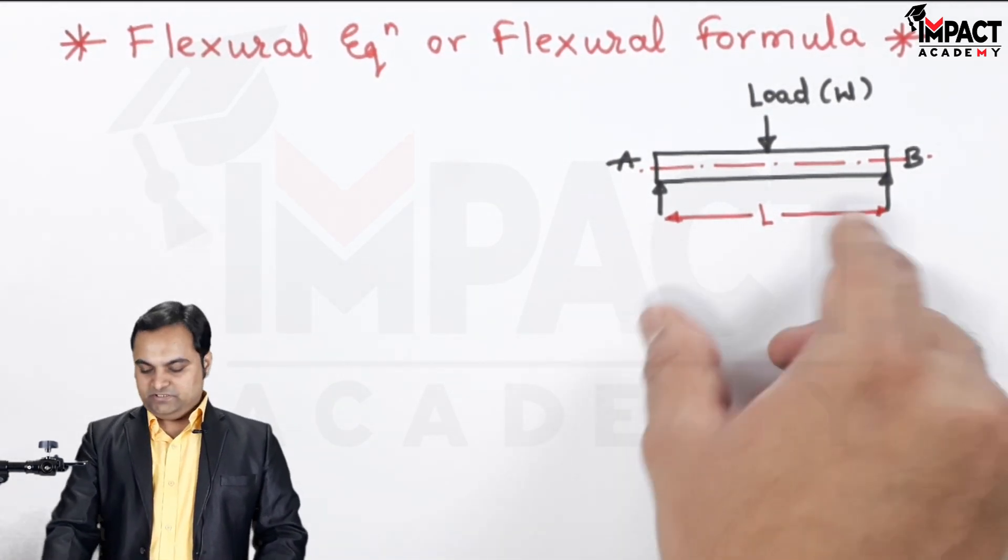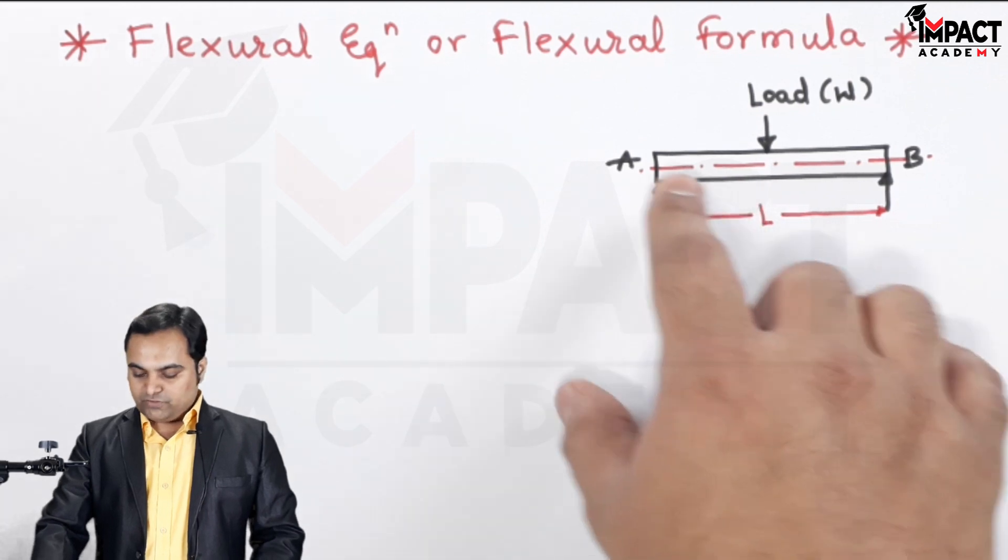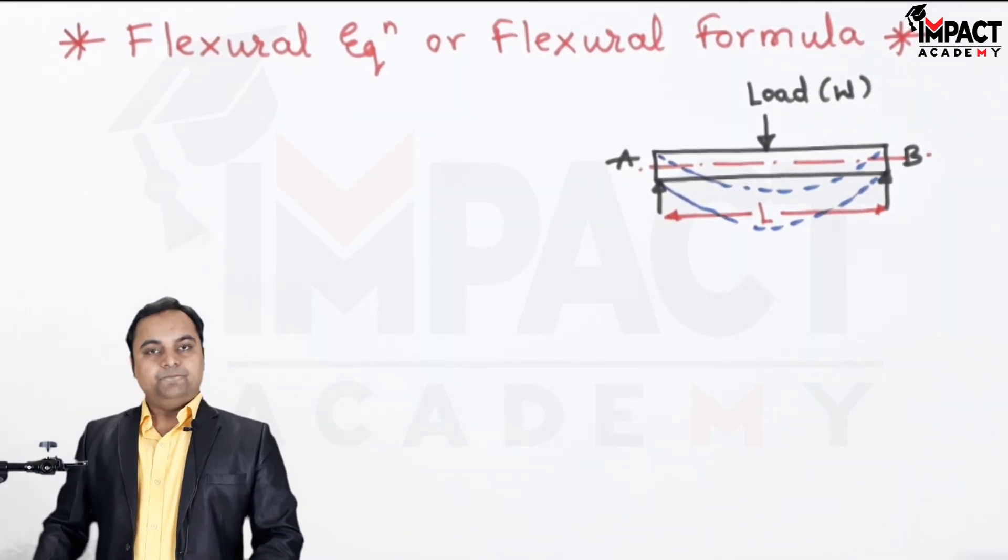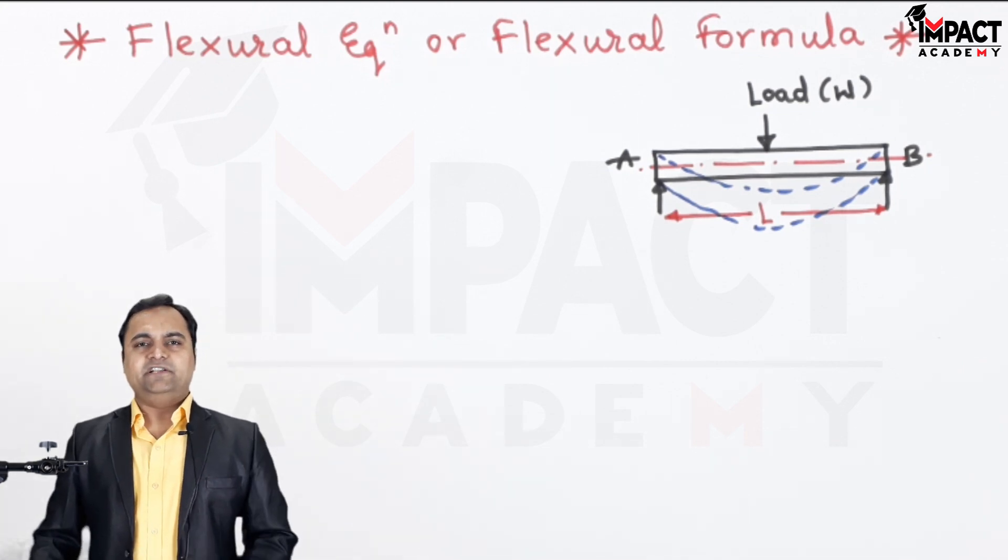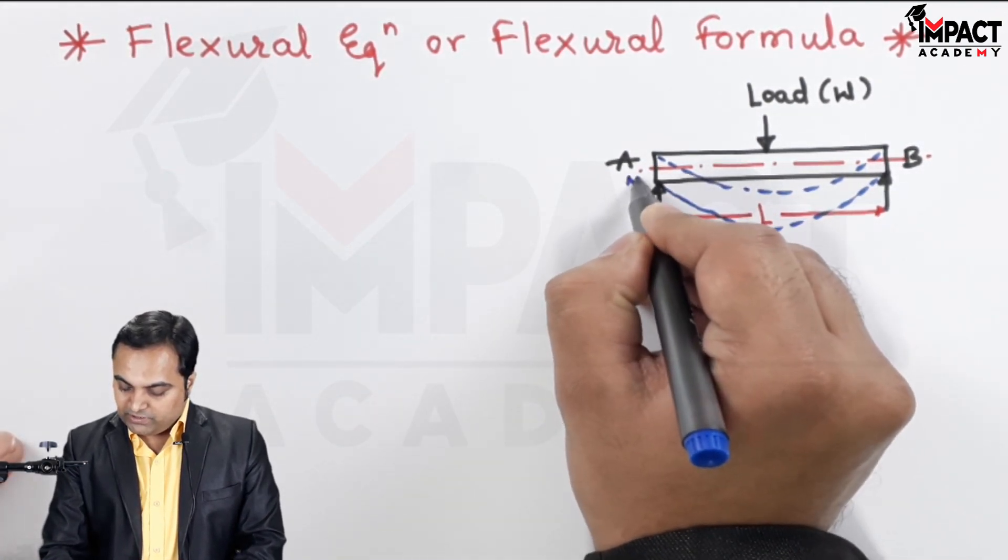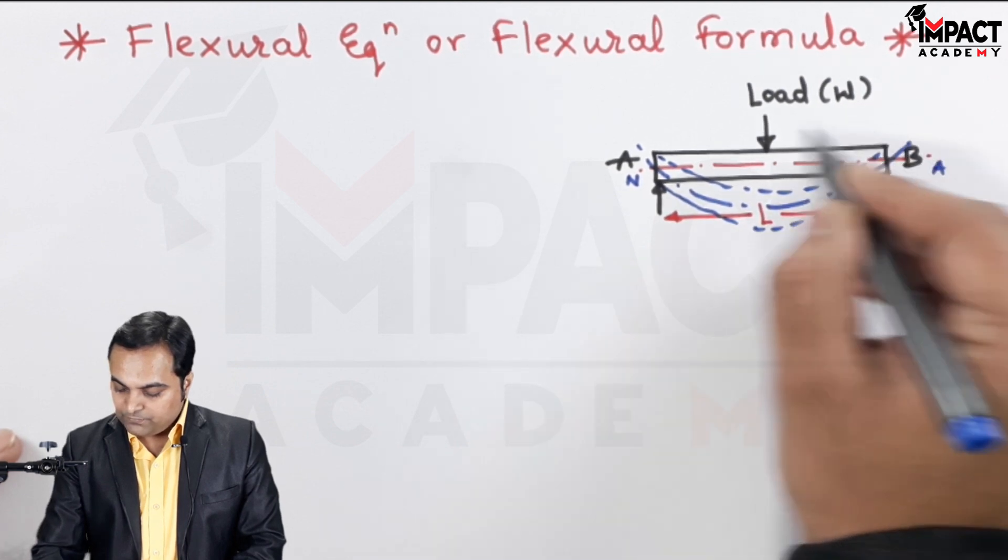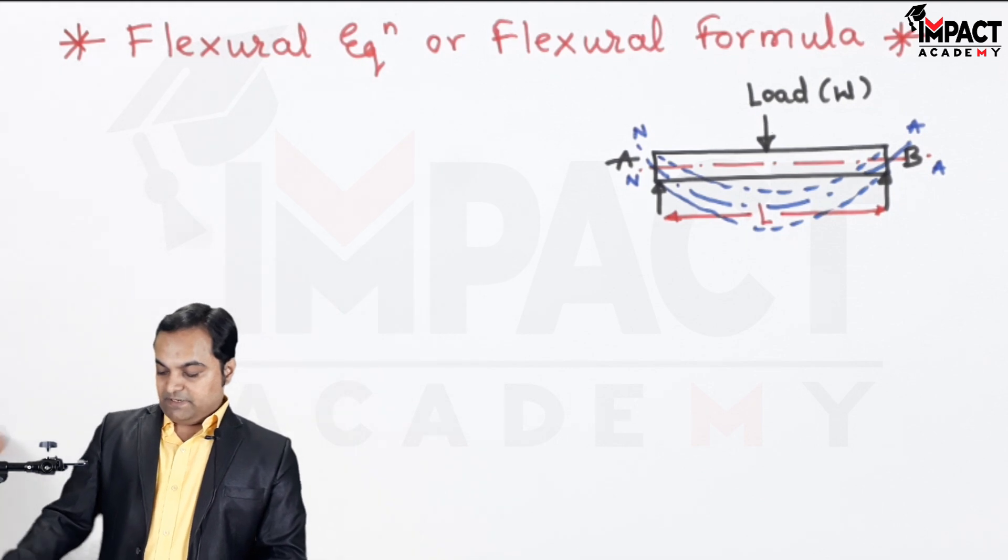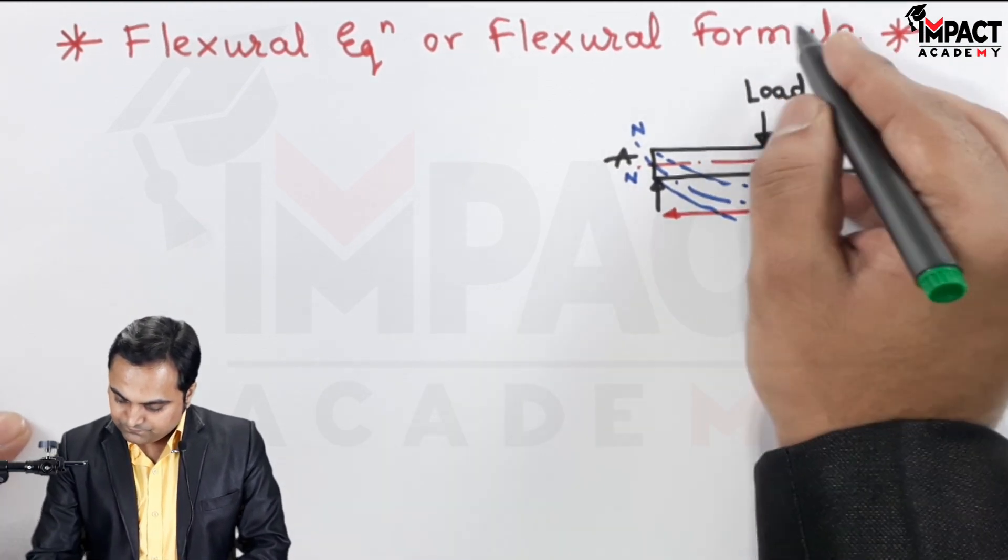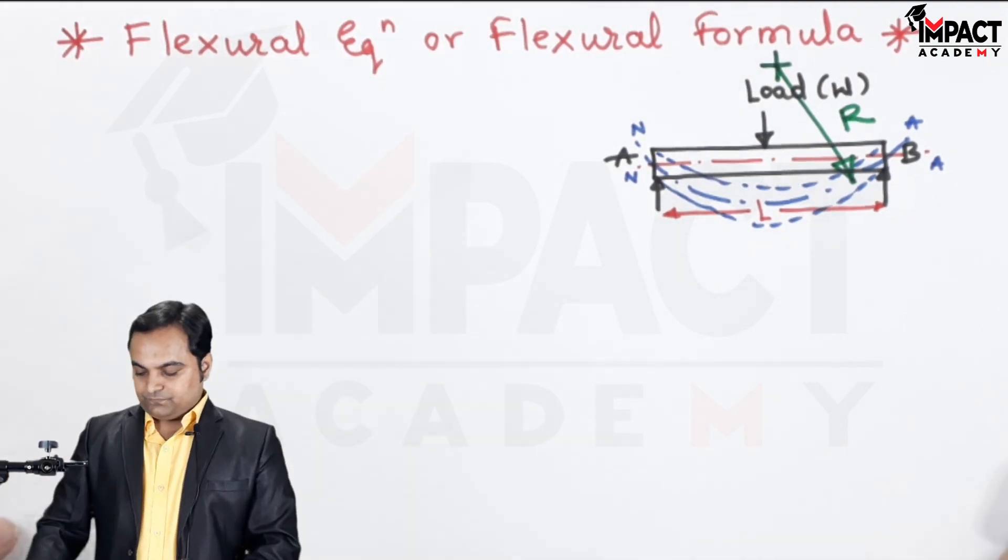Here there is a beam having length L, supported at ends A and B, under the action of load W kept at the center. Because of this, the beam is going to bend. In the flexural formula, we consider only the bending effect and not the shearing stresses. Here there is a line which shows the neutral layer or neutral axis. It is the axis whose length remains constant even after bending of the beam. Since it is bending with respect to the center, there will be a radius of curvature denoted by R.